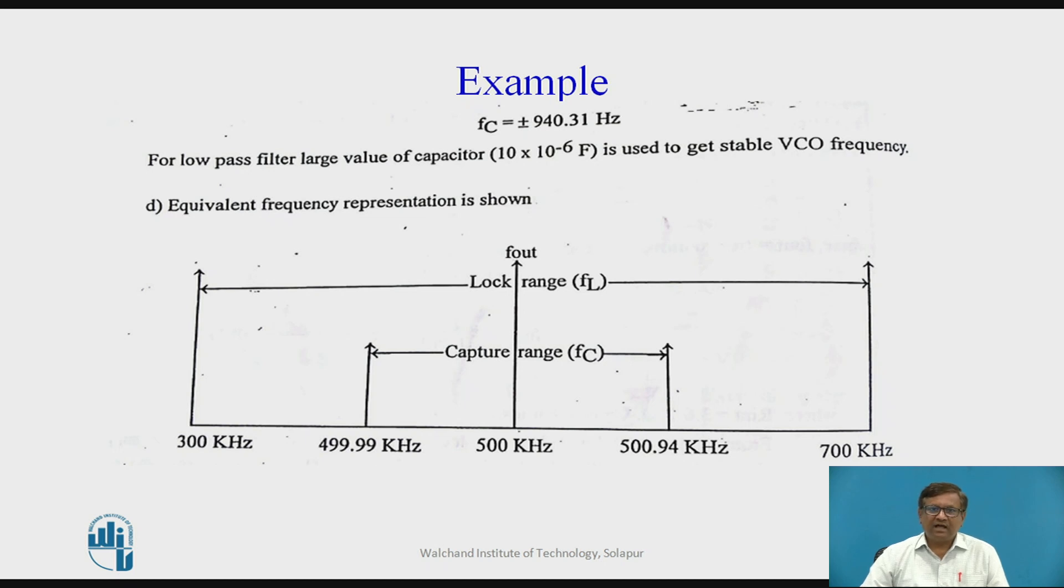Lock range frequency is always higher than the capture frequency range. For low pass filter, large value of capacitor that is 10 microfarad is used to get stable VCO frequency. If you plot the frequency range plot of the VCO, we see that 500 kilohertz is the center frequency of the VCO that is F out.